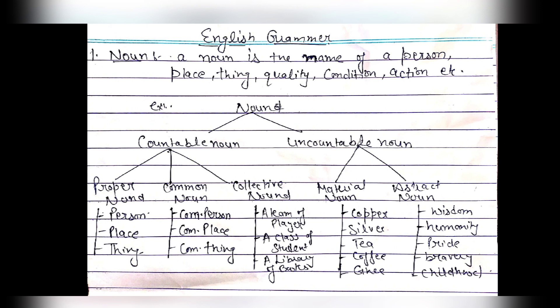Countable nouns have three sub-types: proper noun, common noun, and collective noun. A proper noun is a particular or specific person or place name. A common noun is a general person, place, or thing name. A collective noun refers to a group, such as a group of players, a class of students, or a library of books.